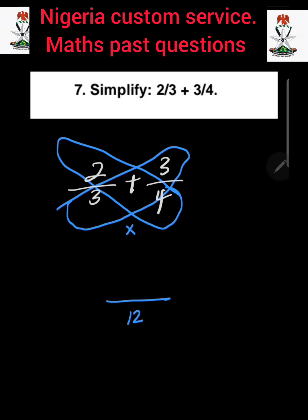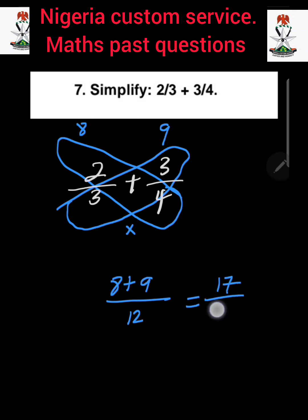Then we cross multiply: 4 multiplied by 2 gives us 8, and 3 multiplied by 3 gives us 9. Then we add them together: 8 plus 9 gives us 17. So the answer is 17 over 12.